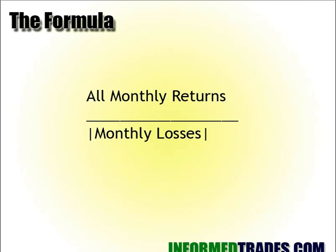The formula for the gain-to-pain ratio is: you take all of your monthly returns — your net monthly return, the net amount of money you made or lost in a month — and you divide it by the absolute value of monthly losses.